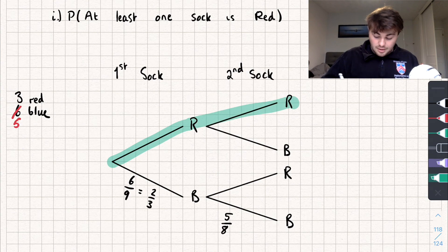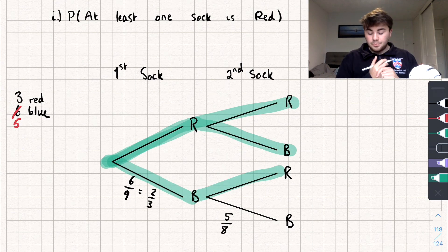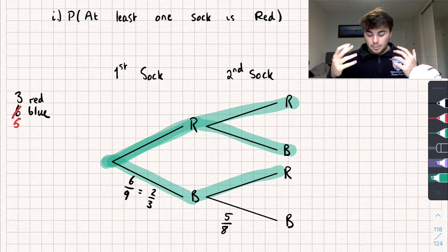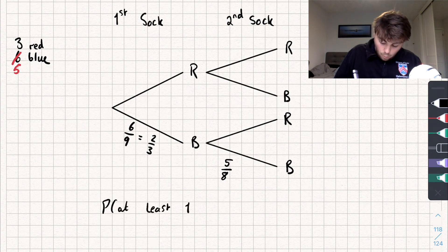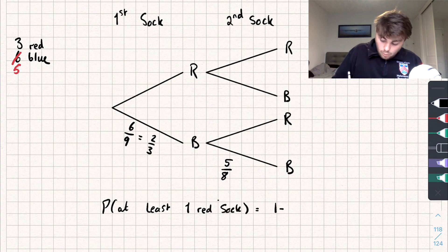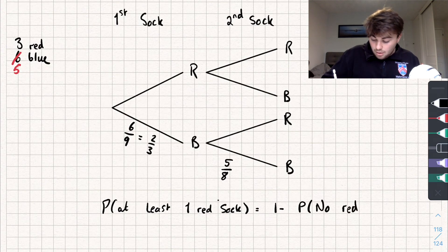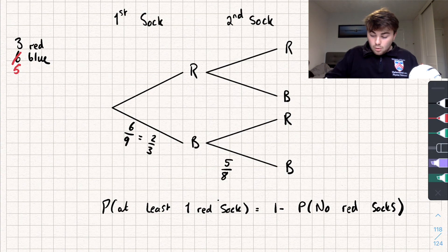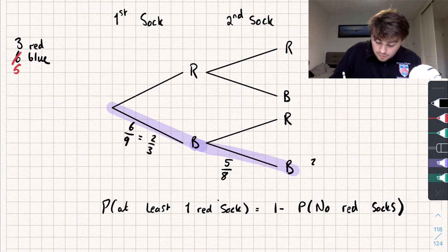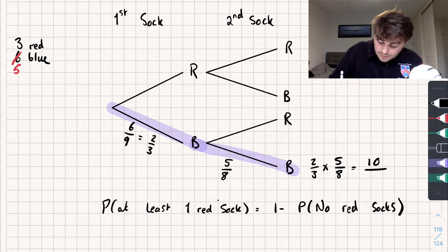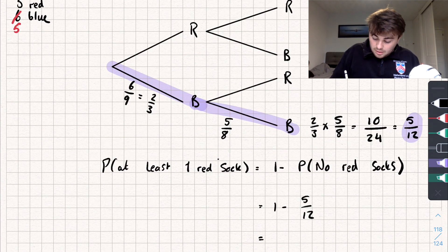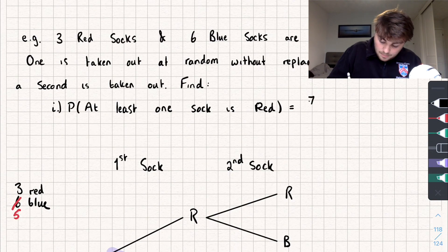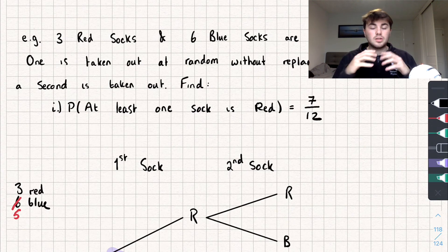We need to find the probability that at least one sock is red. This could be red-red, red-blue, or blue-red — quite a lot of work. Instead, we use the complement: P(at least one red) = 1 − P(no red socks). P(no red) means picking blue then blue: two thirds multiplied by five eighths gives ten twenty-fourths, which simplifies to five twelfths. So the answer is 1 − 5/12 = 7/12.